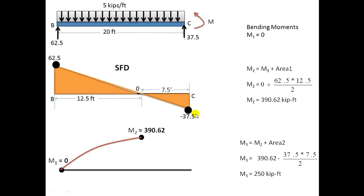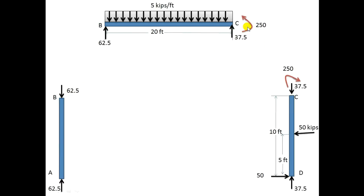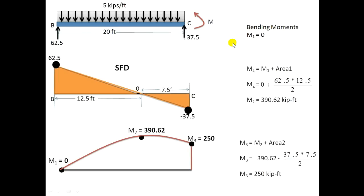M3 equals M2 minus the SFD area on the other side: 390.6 − (37.5 × 7.5 / 2). The bending moment at the end (point B of the beam) does not equal zero but equals 250 kN·m, because this 250 kN·m moment is transferred from joint C to the adjacent member. This confirms the moment transfer between members.